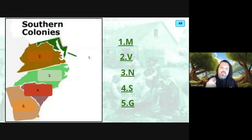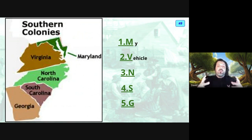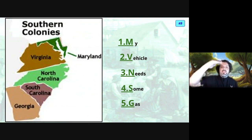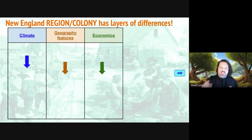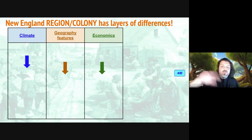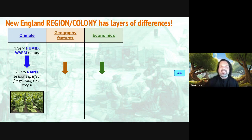Now let's finish with the Southern Colonies tour. In order: one, Maryland; two, Virginia; three, North Carolina; four, South Carolina; five, Georgia. The mnemonic to memorize them top to bottom: My Vehicle Needs Some Gas. The climate all the way at the bottom of the map is going to be the opposite of cold — really warm and really humid, a lot of moisture, which means lots of rainy season. That's great if you're living in the south because you're going to be able to grow your crops.